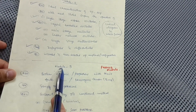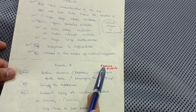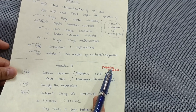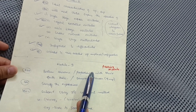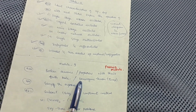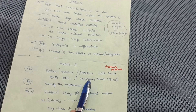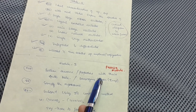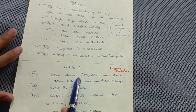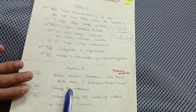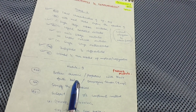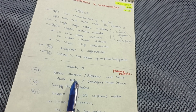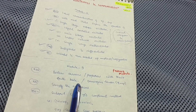Now let's proceed with Module 3, which is the passing module in this subject. You have to cover Boolean theorems and properties with truth tables — these are the most important questions. De Morgan's theorem is the super important question in this module. Writing down the truth table is most important in this electronics and communication subject, as it deals with truth tables throughout.